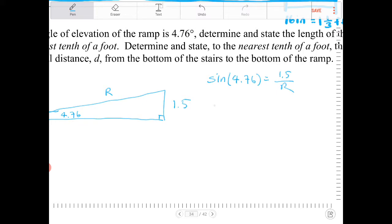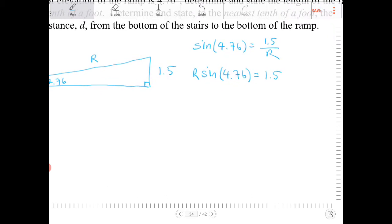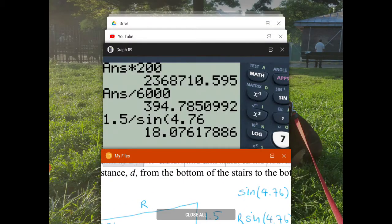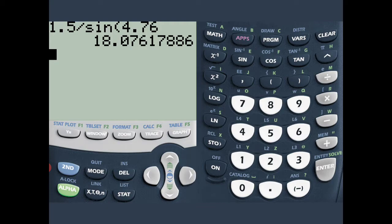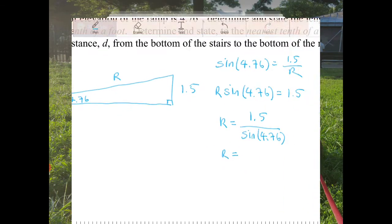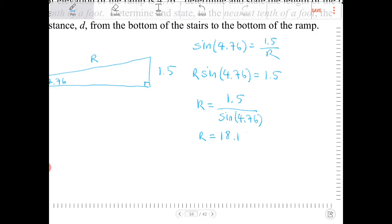I can cross multiply to have r sine of 4.76 is equal to 1.5. And I can divide both sides by sine of 4.76. So r will equal 1.5 over sine of 4.76. And what does this figure actually come out to, to the nearest tenth of a foot? Let's take a look. So 1.5 divided by sine of 4.76, that is 18.1 feet. So the ramp is going to be 18.1 feet.